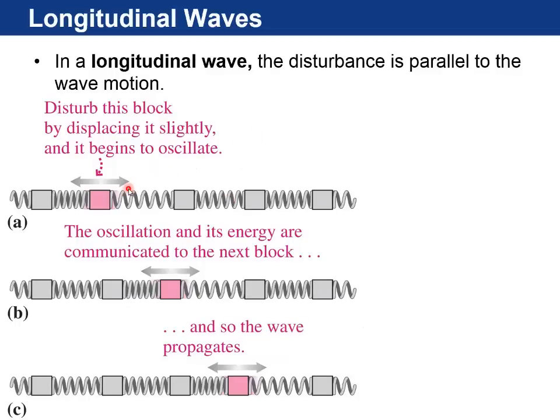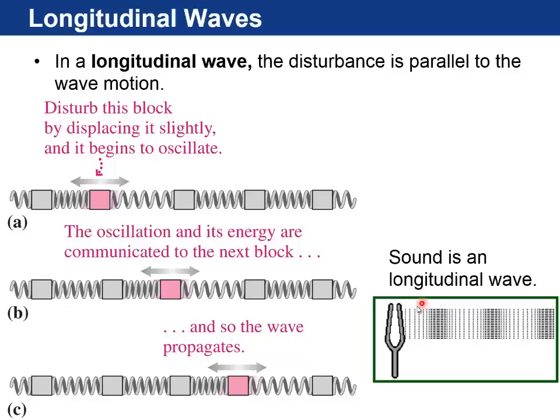In a longitudinal wave, the disturbance is parallel to the wave motion. So if you disturb this block slightly from left to right, it'll begin to oscillate, and that oscillation and its energy are communicated to the next block, and so the wave propagates. And one of the properties here is that these blocks will be more dense in certain places, like closer to each other with compressed springs, and then in other places, they'll be less dense, and you'll have stretched springs. And in fact, sound is a longitudinal wave. Here we have a tuning fork that when you strike it, it vibrates, and then that vibration sets up longitudinal waves in the air, and you can see there's compression areas with higher density air molecules, and then rarefaction areas with lower density. And they travel along in the same direction that the particles themselves are oscillating in. That's a longitudinal wave.